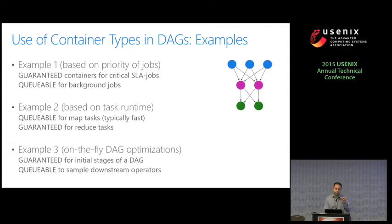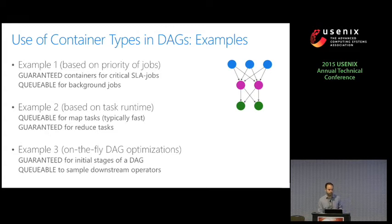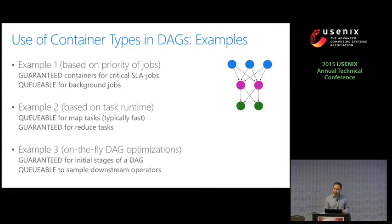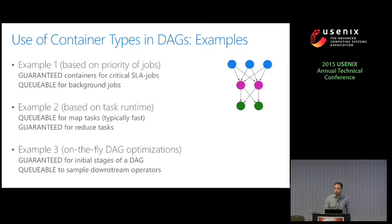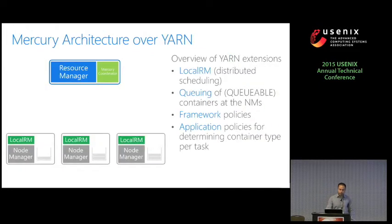To give examples of how these container types would be useful in practice: first, based on job priorities, we can use guaranteed containers for critical SLA jobs where we want to guarantee performance, and queueable containers for background jobs of lower priority. Another example based on task runtime: queueable containers are more suitable for map tasks that are typically faster, reducing the probability of preemption, while guaranteed containers are used for reduce tasks that are typically longer. A more advanced idea involves DAG optimization — using guaranteed containers in the initial DAG stages while using queueable containers to sample some downstream operators and do on-the-fly optimizations.